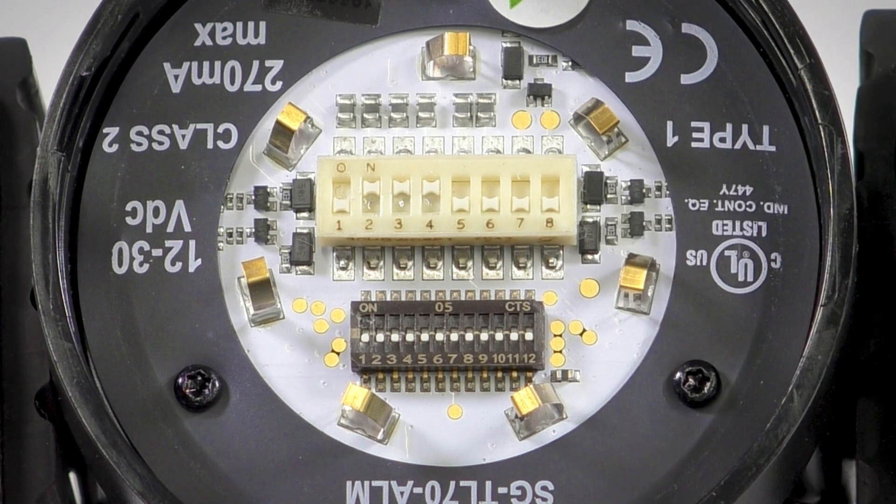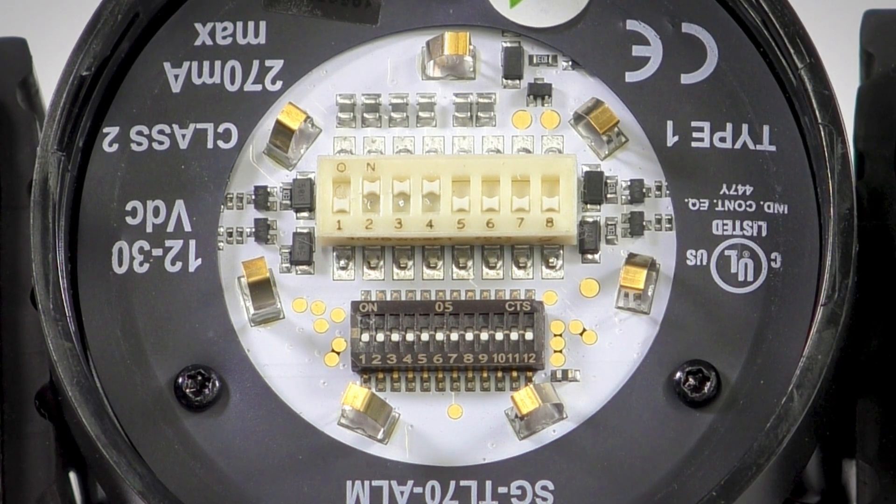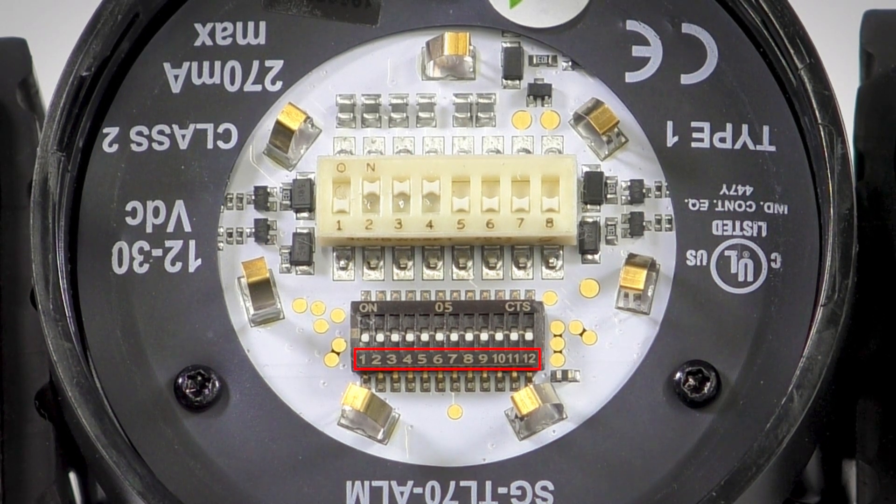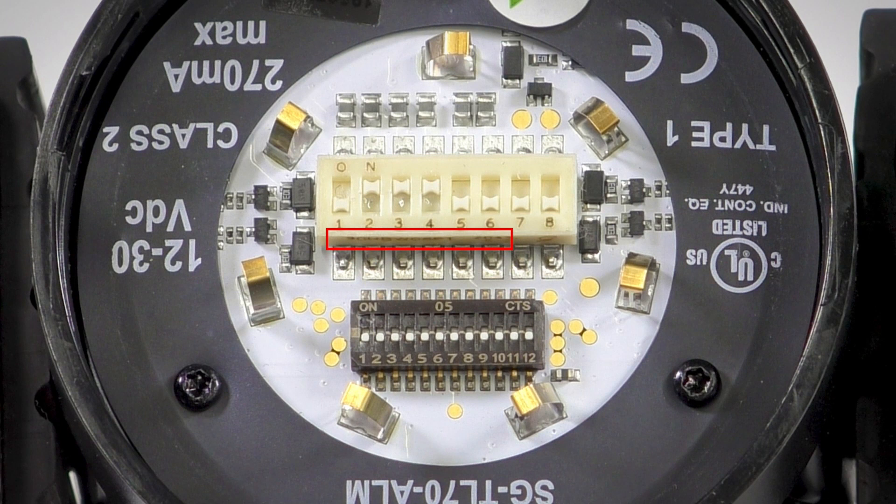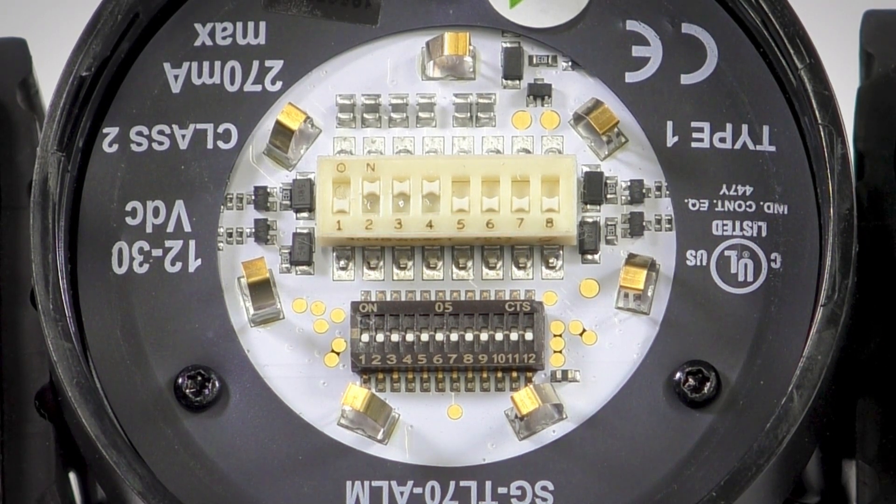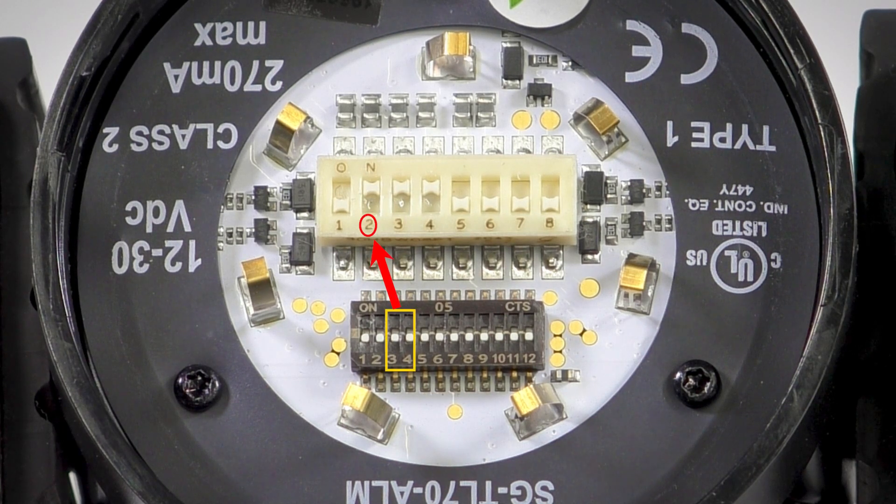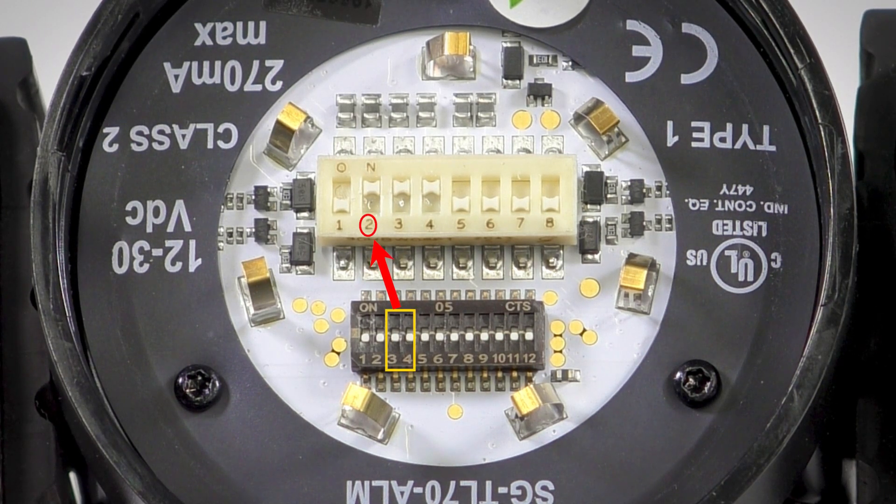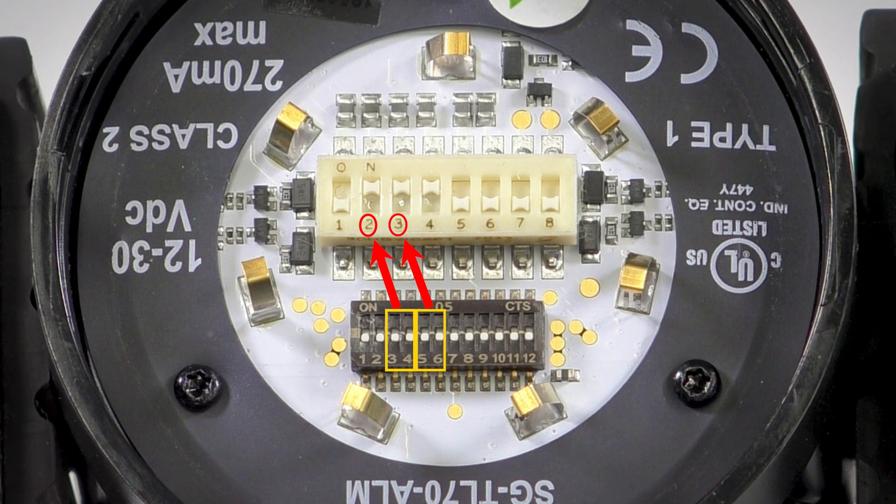Choosing between the four tone options available, we'll do through the black bank of dip switches. Each two switches on the black bank correspond to inputs one through six on the white bank. So because we are using inputs two, three, and four, we'll use switches three and four for number two, five and six for number three, and seven and eight for number four.